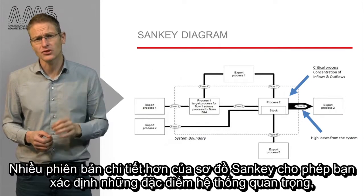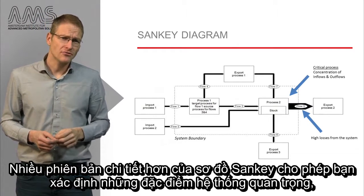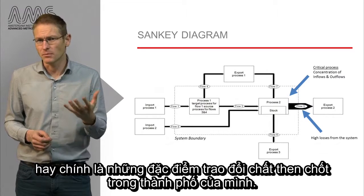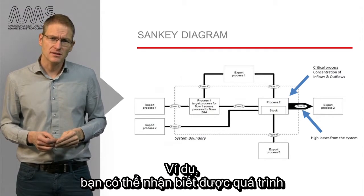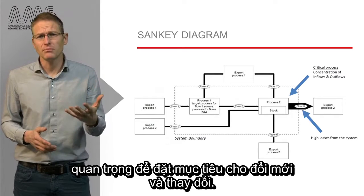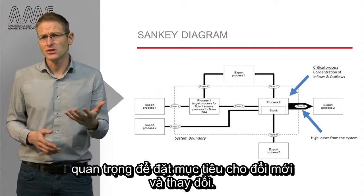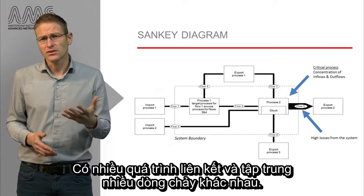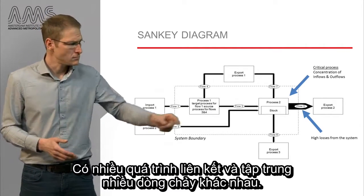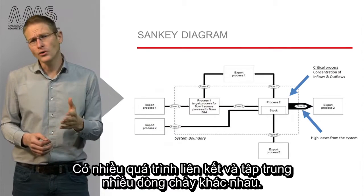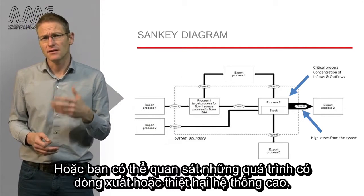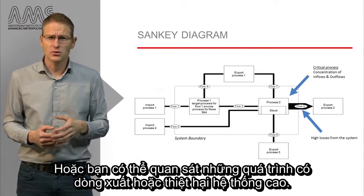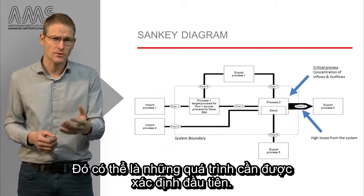More detailed versions of a Sankey diagram enable you to identify critical system properties, or in other words critical metabolism properties of your city. For instance, you can identify the processes that are of key importance to target innovation and change. These are the processes that link and concentrate many different flows, shown over here. Or you can look at the processes that have a high output flow or system losses — these could be the processes that are crucial to address first.